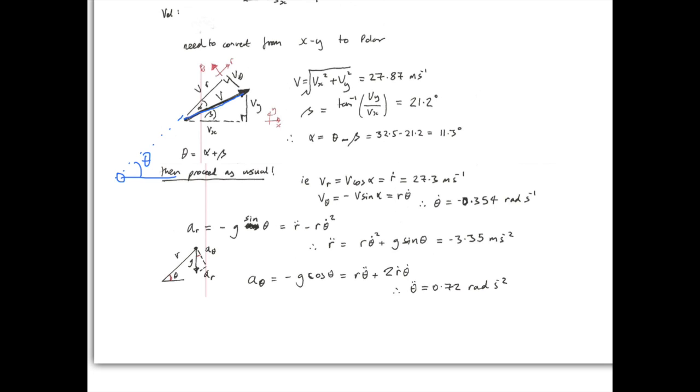Now, Beta can be worked out from the Y and X components of the velocity that we've just calculated above. And, Beta is 21.2 degrees. And, Alpha is then the difference between Theta, which we've calculated above, and Beta, which we've just calculated. And, this comes out to be 11.3 degrees.